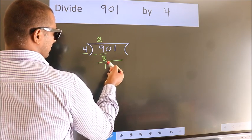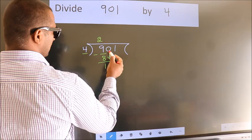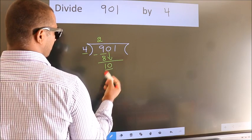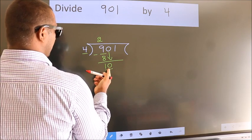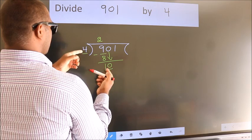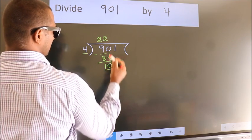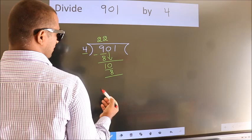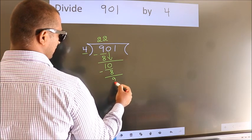After this, bring down the beside number. So, 0 down. So, 10. A number close to 10 in 4 table is 4 twos, 8. Now, we subtract. We get 2.